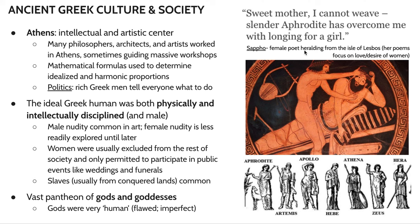Slaves were also very common in ancient Greece. Slaves in this case were people that were essentially from conquered lands. Ancient Greek culture was also manifested as this pantheon of gods and goddesses. The gods in ancient Greece were very human — they were flawed and imperfect — and yet despite this, oftentimes when we see depictions of gods and demigods, they have these very godly, perfect attributes to them.